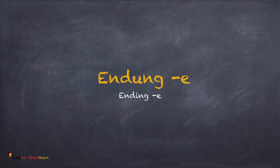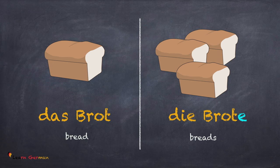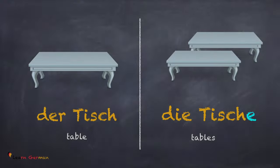Let's begin with Endung E in plural. The first example is Das Brot — Die Brote. The next example is Der Tisch — Die Tische. Just like these two examples, you only add an E at the end to make the plural form.